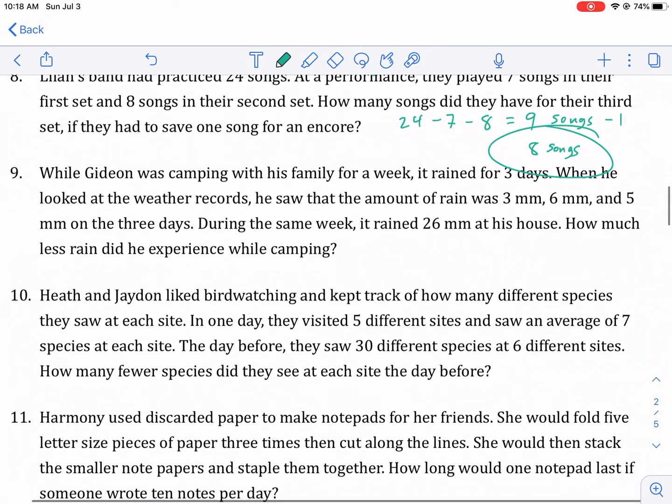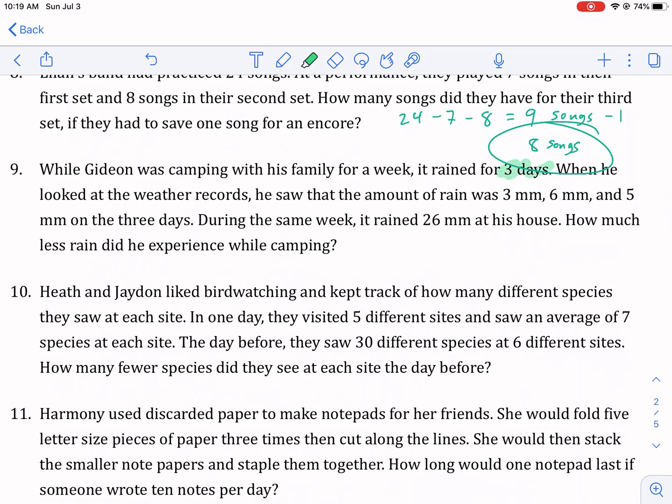While Gideon was camping with his family for a week, it rained for three days. Three days. When he looked at the weather records, he saw the amount of rain was three mm, six mm, that's millimeters, and five mm on the three days. In total, what was that? That's nine plus five. That's 14 millimeters. During the same week, it rained 26 mm at his house. How much less rain do you experience while camping? So 26, it rained more at his house. How much less? We're finding the difference. That means subtraction. 26 minus 14. And what is that? That's six plus six. That's 12. 12 millimeters. And that's going to be our answer.